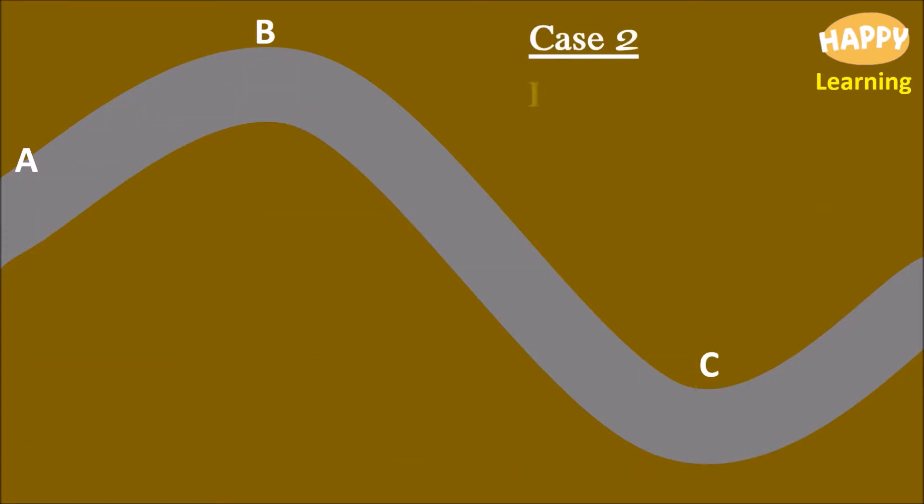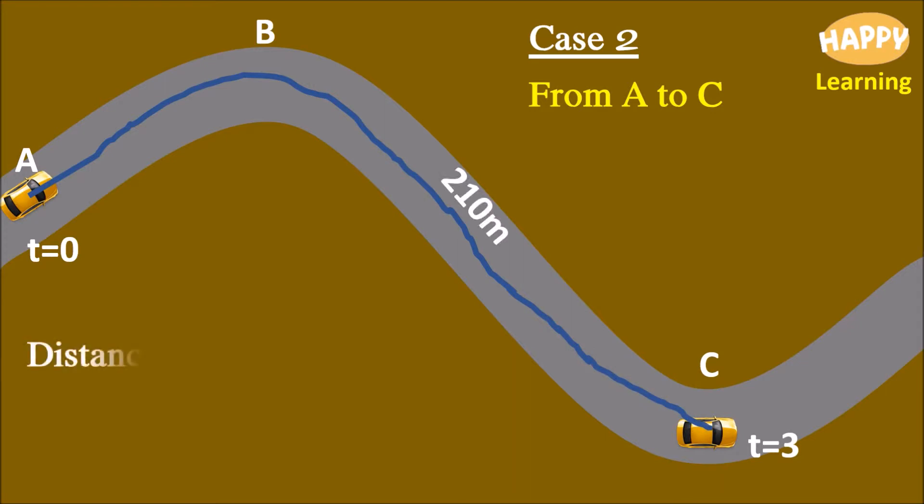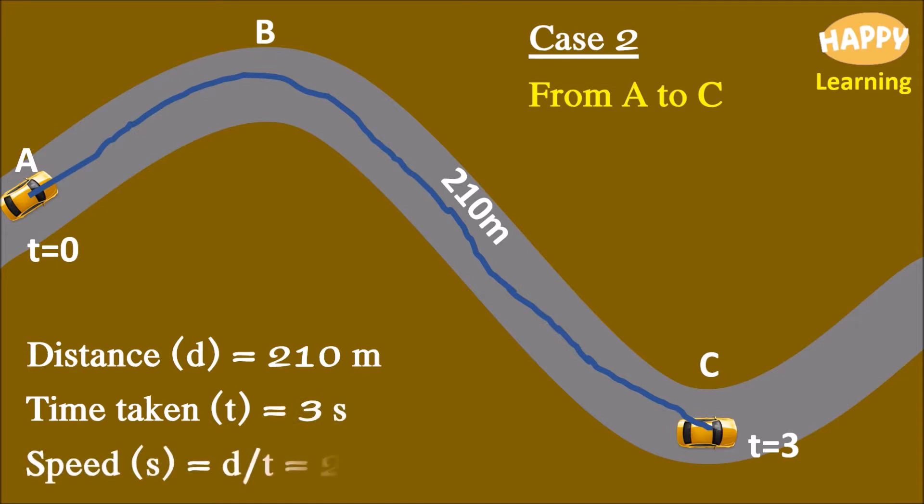Case 2. From A to C. The length of the track from A to C is 210 meters. Therefore, distance D is equal to 210 meter. Time taken is equal to 3 seconds. Speed is equal to 70 meter per second.